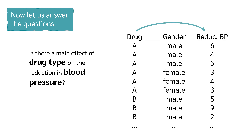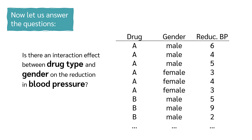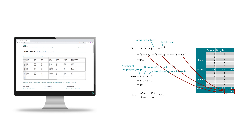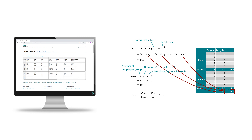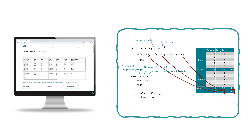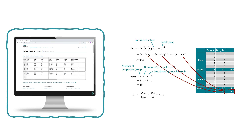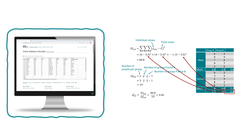We want to answer three questions: Is there a main effect of drug type on the reduction in blood pressure? Is there a main effect of gender on the reduction in blood pressure? And is there an interaction effect between drug type and gender on the reduction in blood pressure? For the calculation, we can use either statistical software like DataTap or do it by hand. I will first show you how to calculate it with DataTap and interpret the results.